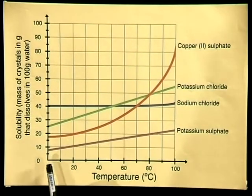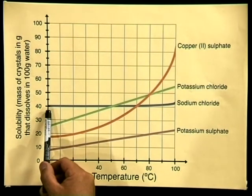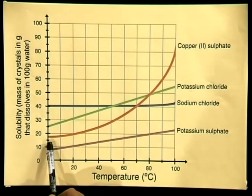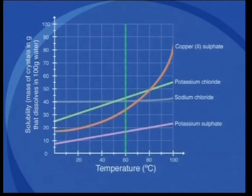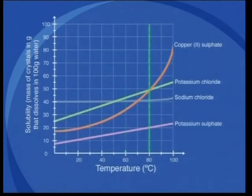Next, do you notice that at 0 degrees Celsius, sodium chloride was the most soluble, then potassium chloride, copper sulfate and lastly potassium sulfate. Does this order change as temperature increases? For example, what will be the order of solubilities at 60 degrees Celsius and at 80 degrees Celsius? We find that the most soluble is potassium chloride followed by sodium chloride, copper sulfate and the least soluble is potassium sulfate. At 80 degrees Celsius, we find that the most soluble is now copper sulfate followed by potassium chloride, then sodium chloride and still the least soluble potassium sulfate.